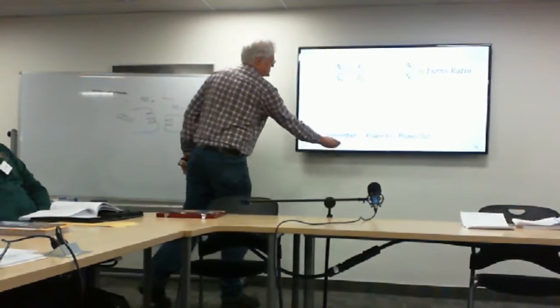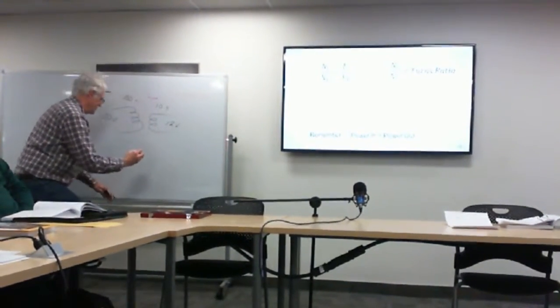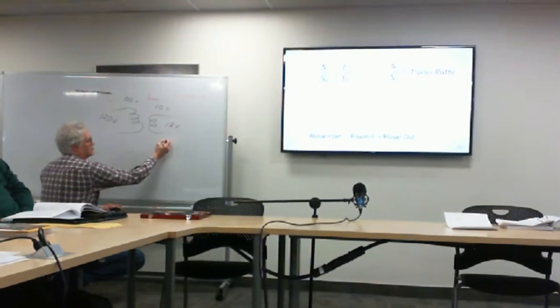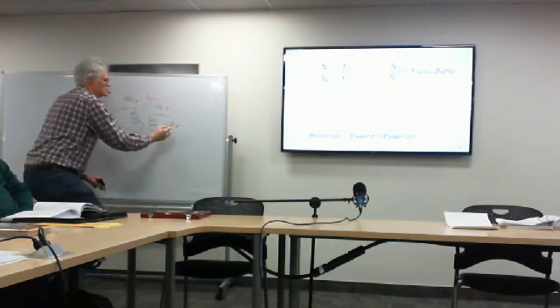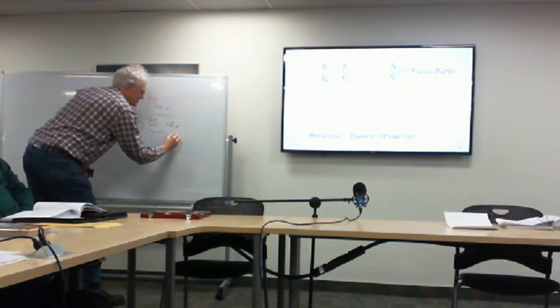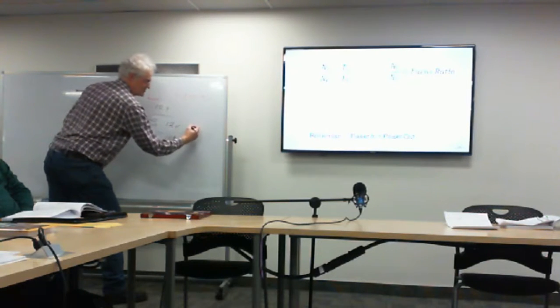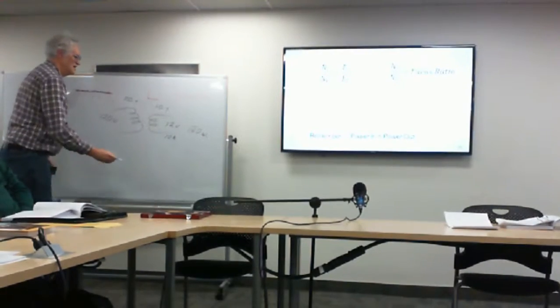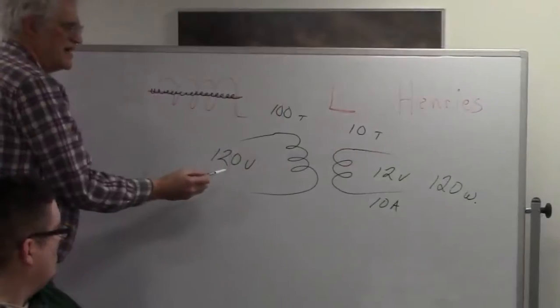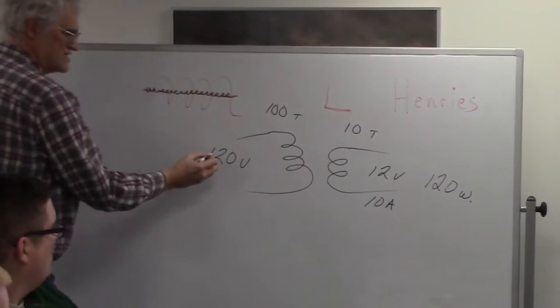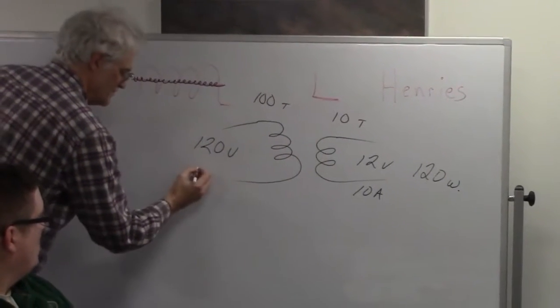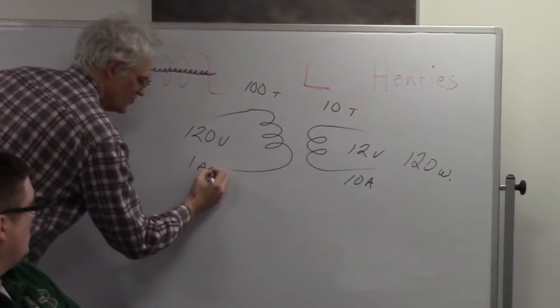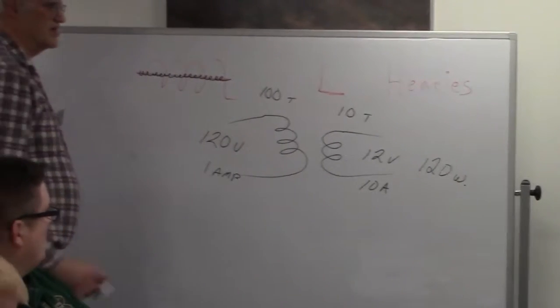Remember: power in equals power out. Say we have 12 volts out drawing 10 amps — that's 120 watts. The power in has to match, so 120 watts divided by 120 volts gives us one ampere of primary current. Everything is in ratios.